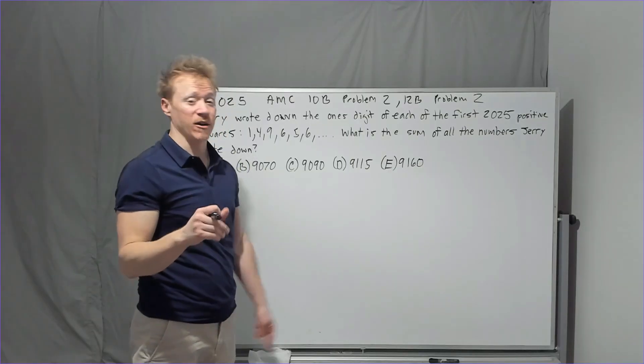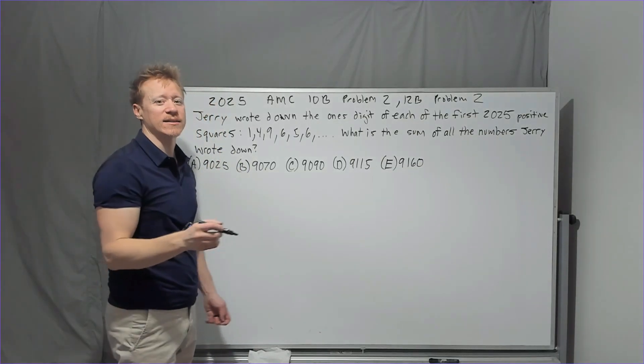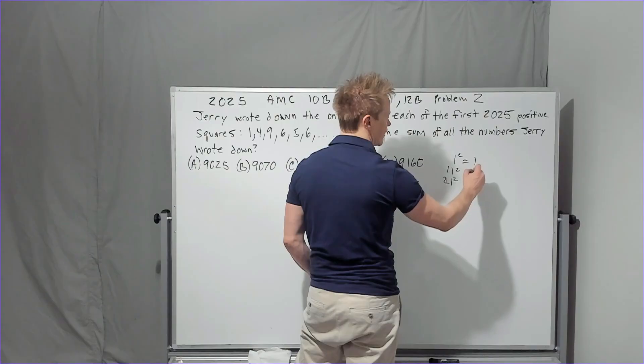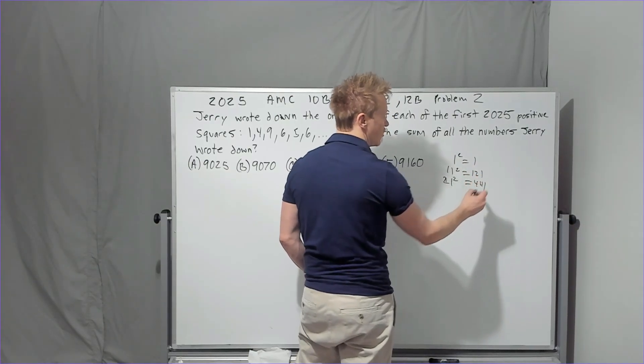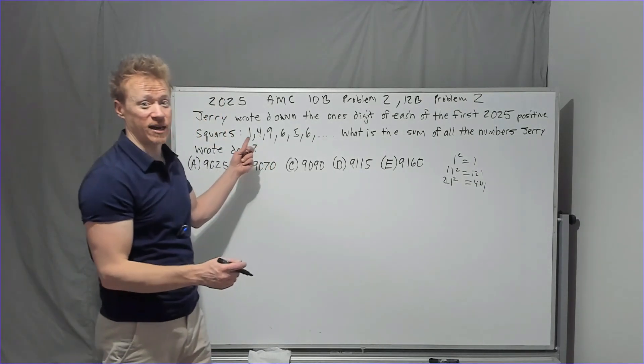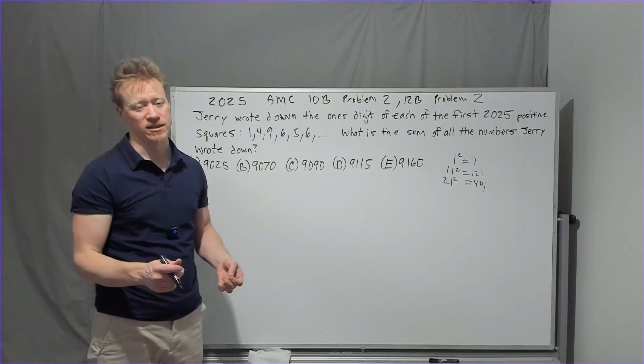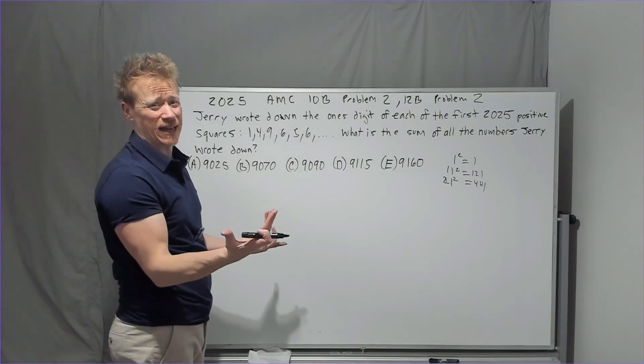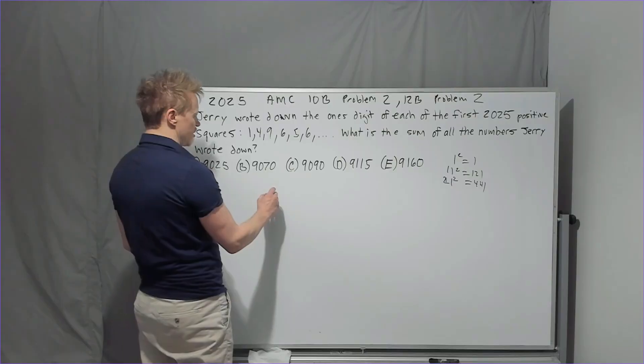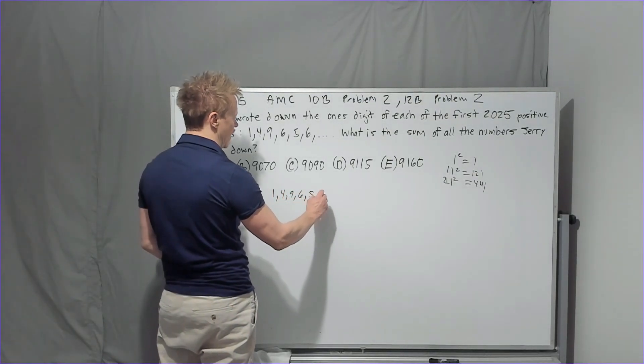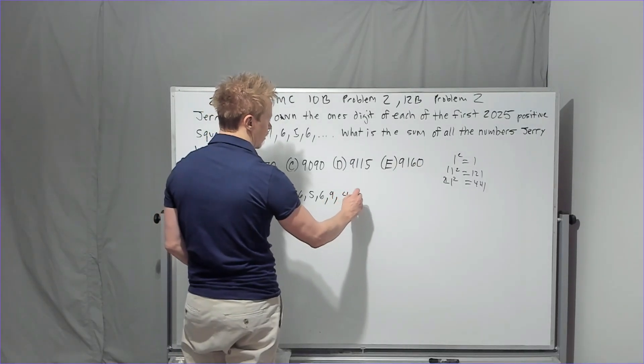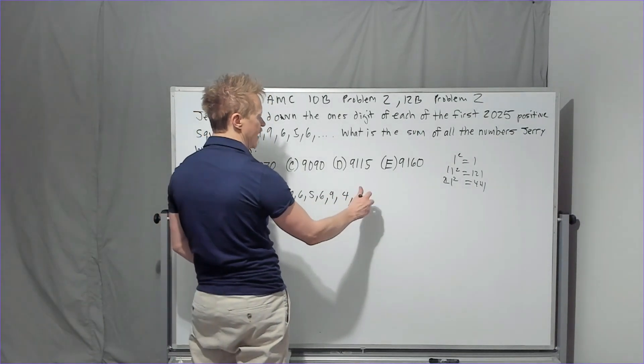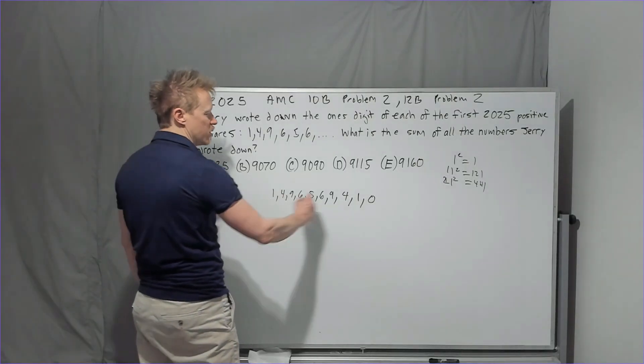At first you might be like, if you haven't done any number theory at all, it might seem like who can possibly do this? But what you have to realize is that every single number that ends in one will always end in one when you square it. Every number that ends in two will end in four when you square it. Every number that ends in three will end in nine and four will end in six and so on. So you don't need to do all of them. You just need to know what the sum of the first 10 is. We'll just write these out: 1, 4, 9, 16, 25, 36, 49, 64, 81, and 10, the zero.